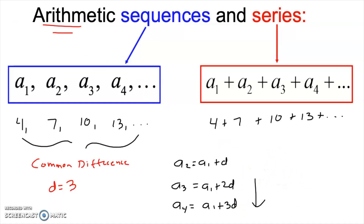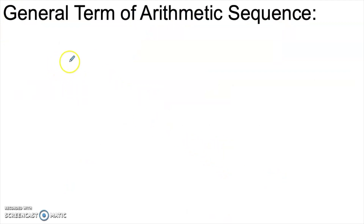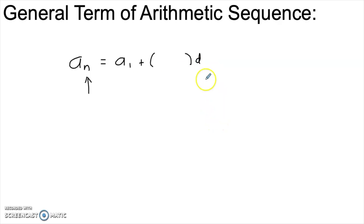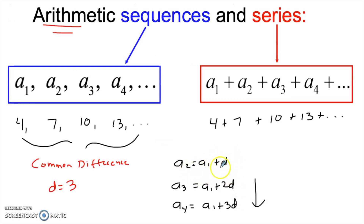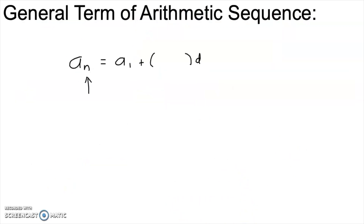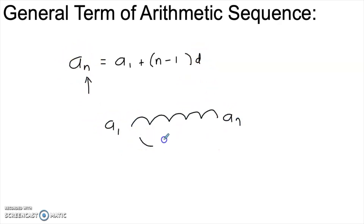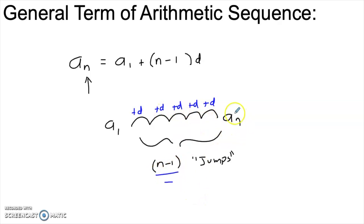The pattern developing is what we call the general term of an arithmetic sequence. If I want to know a sub n for some sequence, the nth term is going to be a sub one — the first term — plus some number of those common differences d. The question is how many? Notice that a sub two was one d added to a sub one, a sub three was two d's, a sub four was three — so it's always n minus one times d. To get to the nth term, you start at a sub one and make n minus one jumps, each adding d.